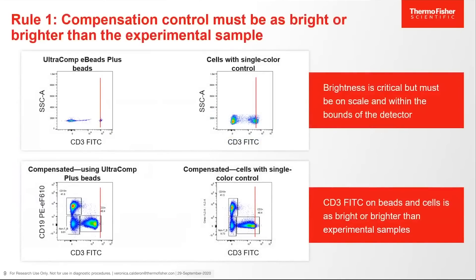Rule 1: compensation control must be as bright or brighter than the experimental sample. These plots give a visual representation of Rule 1. Ultracomp eBeads Plus in the upper left and cells in the upper right are stained with CD3 FITC. Brightness is critical but must be on scale and within the bounds of the detector. The red line represents how the CD3 FITC antibody signal on the beads or on the cells is as bright or brighter than the experimental sample.